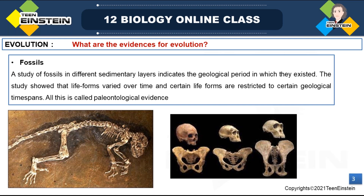We need evidence. We can't believe that evolution happened or that these things evolved from another life form without any proof. So there must be some kind of proof to believe such things. Fossils are the main evidences. Fossils are the remains of the hard parts of life forms found in rocks. That is called a fossil.